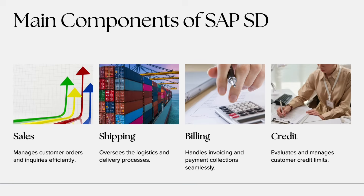Now that we know what SAP SD does, let's break it down into its main components. The SD module is made up of several sub-components, each responsible for a specific part of the sales process. Component one is Sales — this is where customer orders are created. It includes inquiry, quotation, and sales order management.